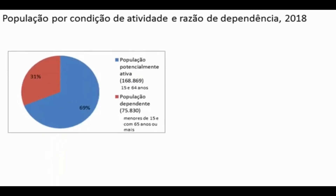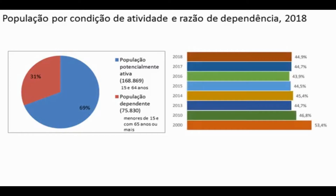Avançando, podemos observar as condições de atividade e a razão de dependência da população, dados de 2018. Observa-se que 69% da população de Viamão é potencialmente ativa, ou seja, tem idade entre 15 e 64 anos e pode potencialmente produzir. Já 31% é a população dependente, são os menores de 15 ou aqueles com 65 anos ou mais. A razão de dependência em 2018 equivalia a 44,9% da população ativa.